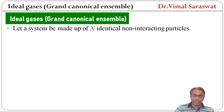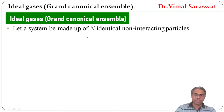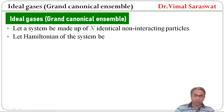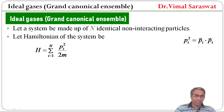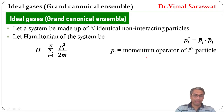Let a system be made up of identical non-interacting particles. Let the Hamiltonian of this system be H equal to sigma i equal to 1 to N, pi square upon 2m. Here pi is linear momentum whereas m is mass of particle. Vector pi is the momentum operator of the i-th particle, and vector pi dot vector pi gives pi square.